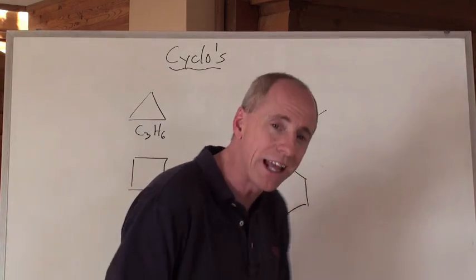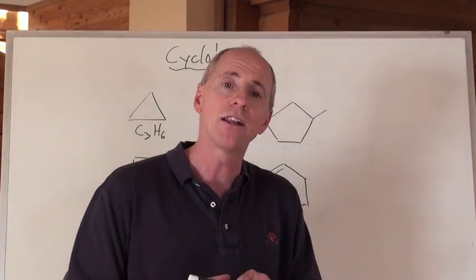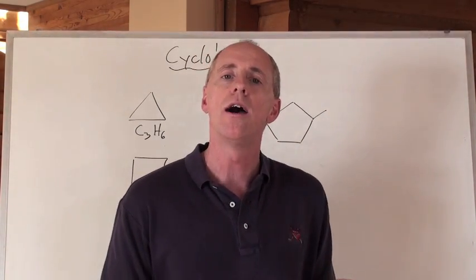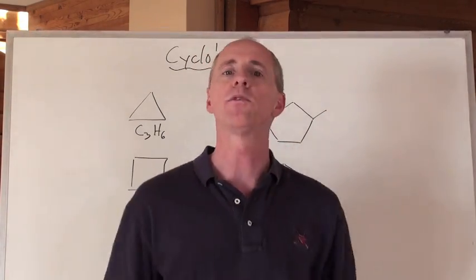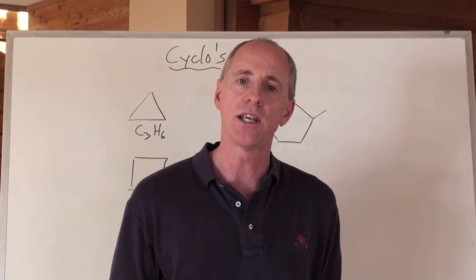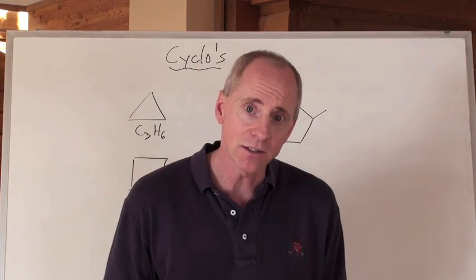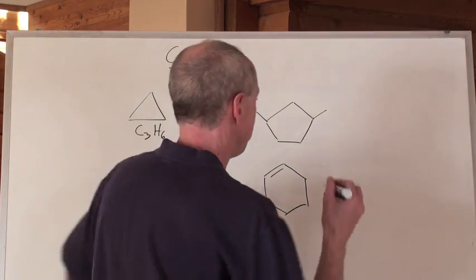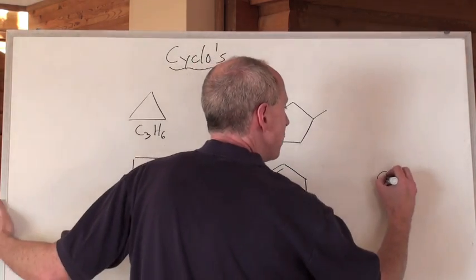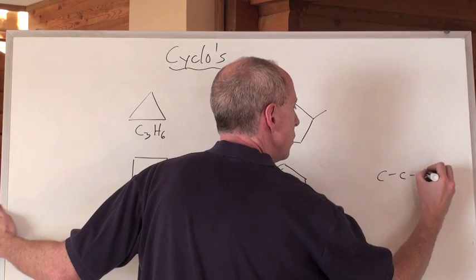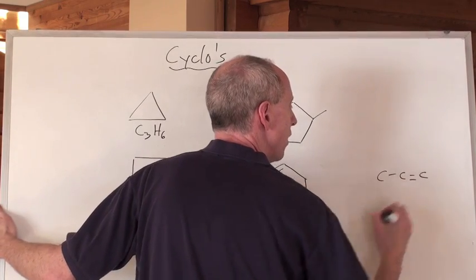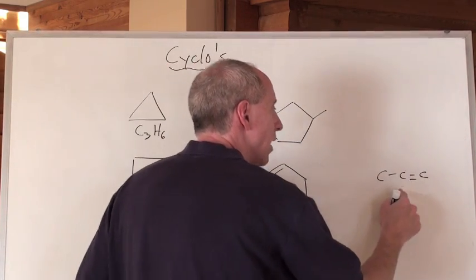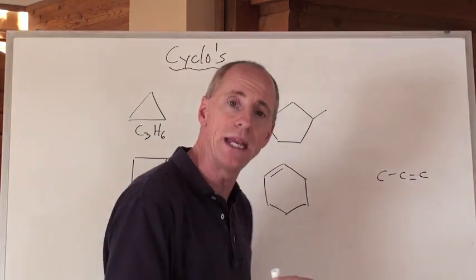That looks like it could be an alkene. If you draw all the isomers for C3H6 — C3H6, because it's one, two, three, there's a double bond — that could actually be propene.